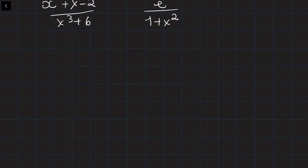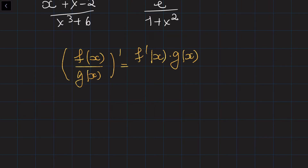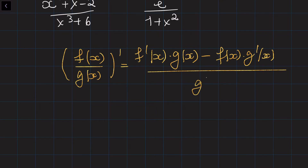So how do we find the derivatives of this kind of function? In the general case, if you are given the quotient of two functions — f divided by g — then the derivative of this ratio equals the derivative of the numerator function times the denominator function. It is critically important that for the quotient rule, unlike the product rule, the order matters: we must take the derivative first from the function in the numerator. So it's f'(x) times g(x) minus f(x) times g'(x), all divided by g²(x).